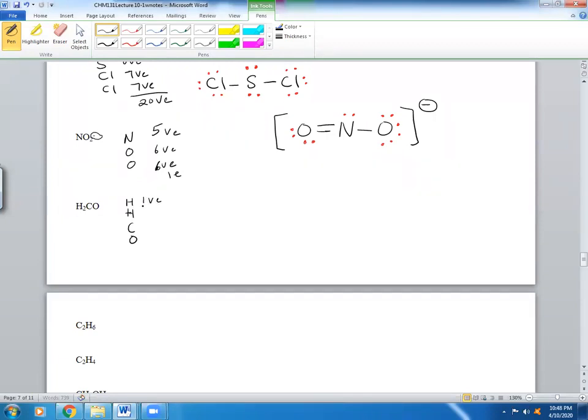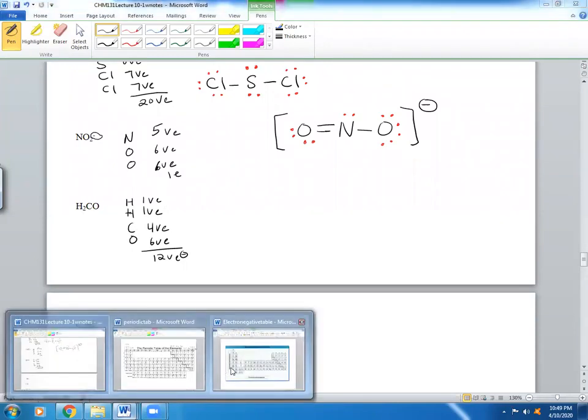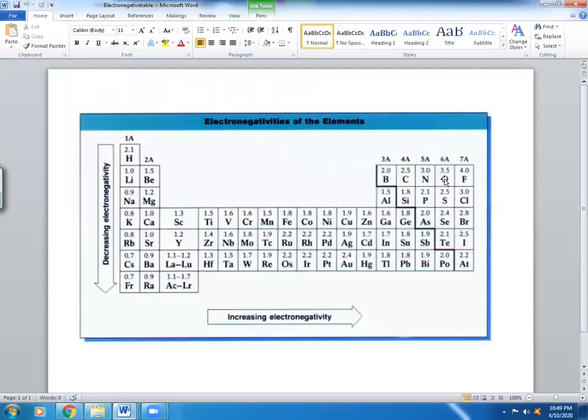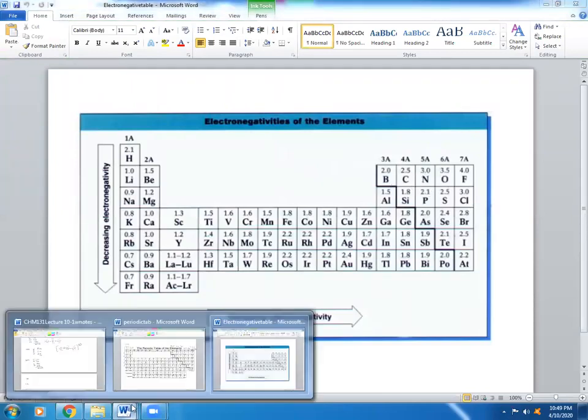Look up the valence electrons of these. H is 1, H is 1, C is 4, and O is 6. So this should be 12 valence electrons. Which atom is central? H cannot be central. These are not central atoms because they only have one electron. So how are they going to form bonds with multiple atoms? So it has to be C. It's less electronegative than O.